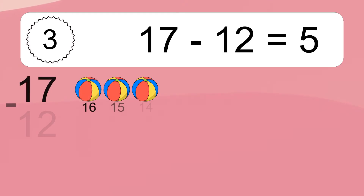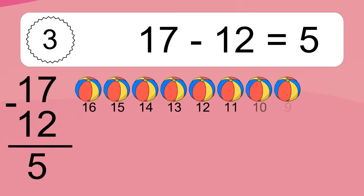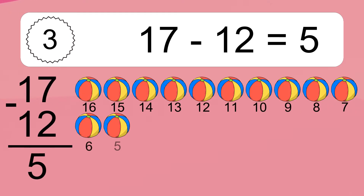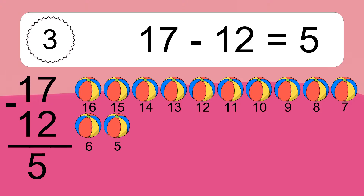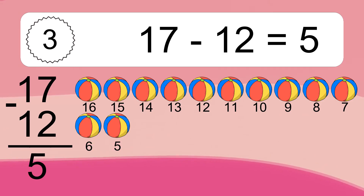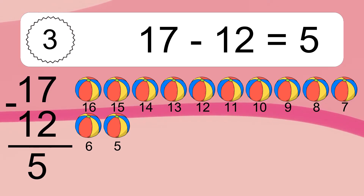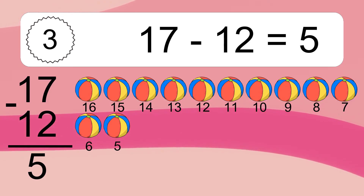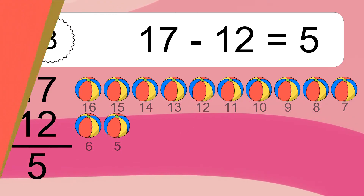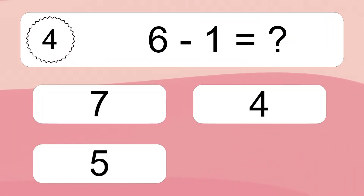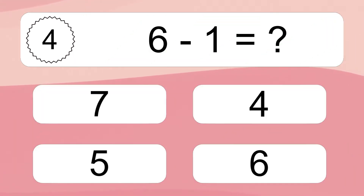17 minus 12 equals 5. Let's count it: 16, 15, 14, 13, 12, 11, 10, 9, 8, 7, 6, 5. 6 minus 1 equals what?